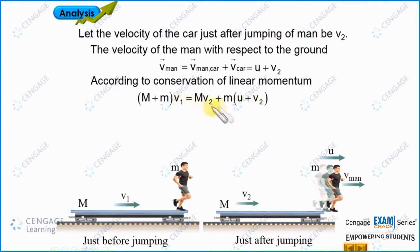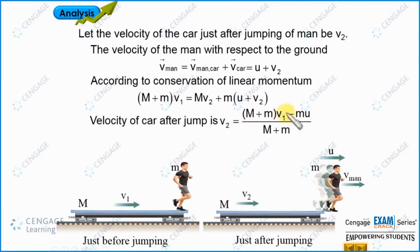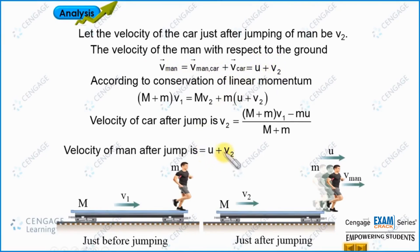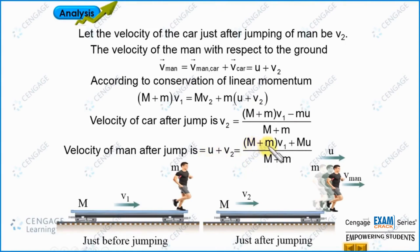Applying conservation of linear momentum and rearranging, we can find v2 — the velocity of the railroad car just after jumping. For calculating the velocity of the man, we add v2 to u, so the velocity of the man with respect to ground equals u plus v2. Substituting the value of v2 and simplifying, the velocity of the man equals (capital M plus small m) times v1 plus capital M times u, all divided by (capital M plus small m). These are the velocities of the man and car just after jumping.